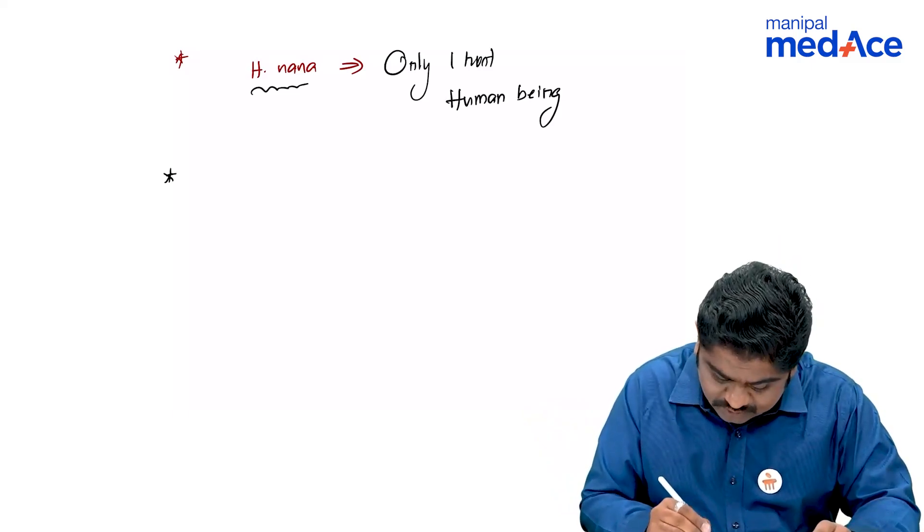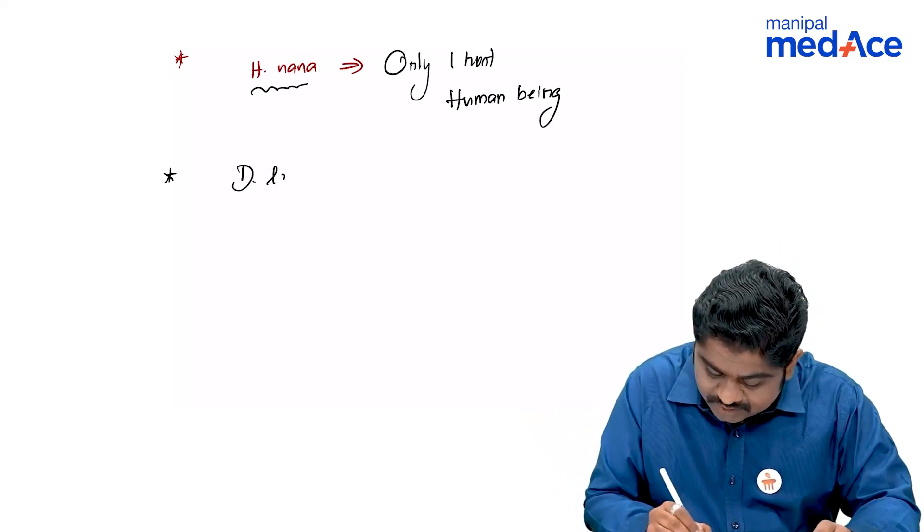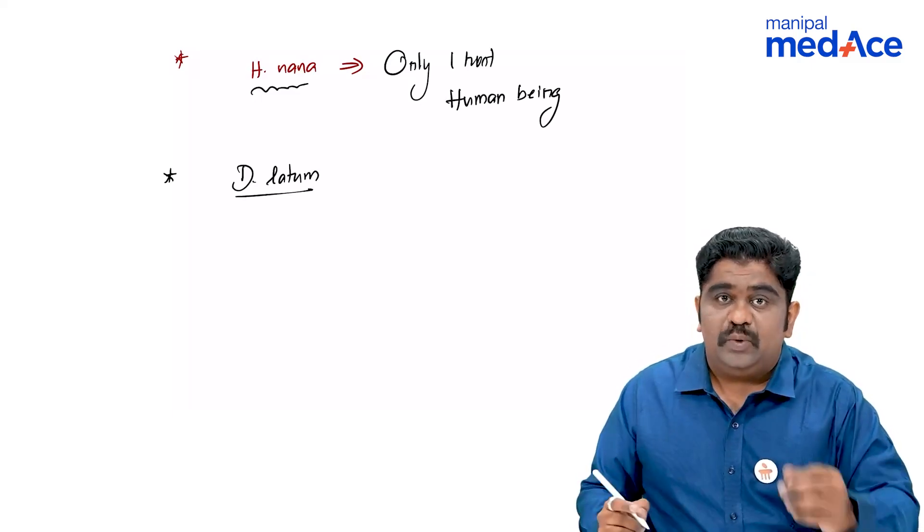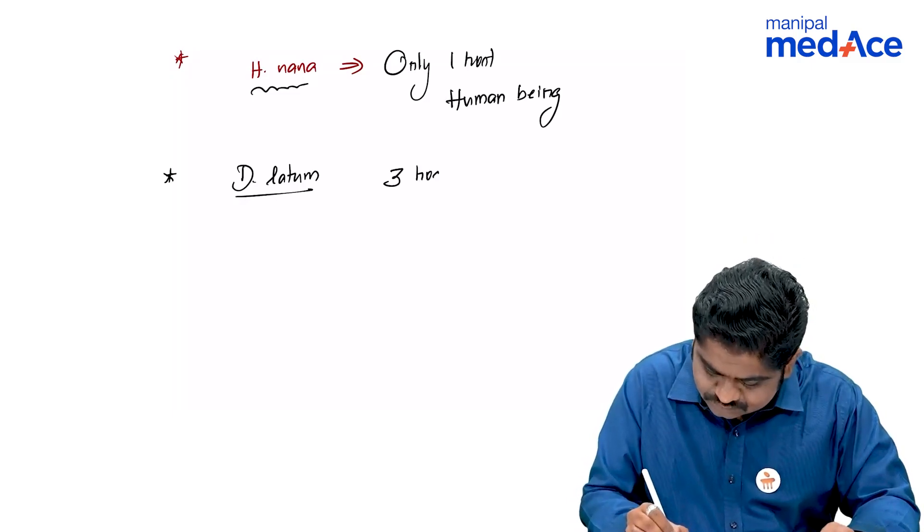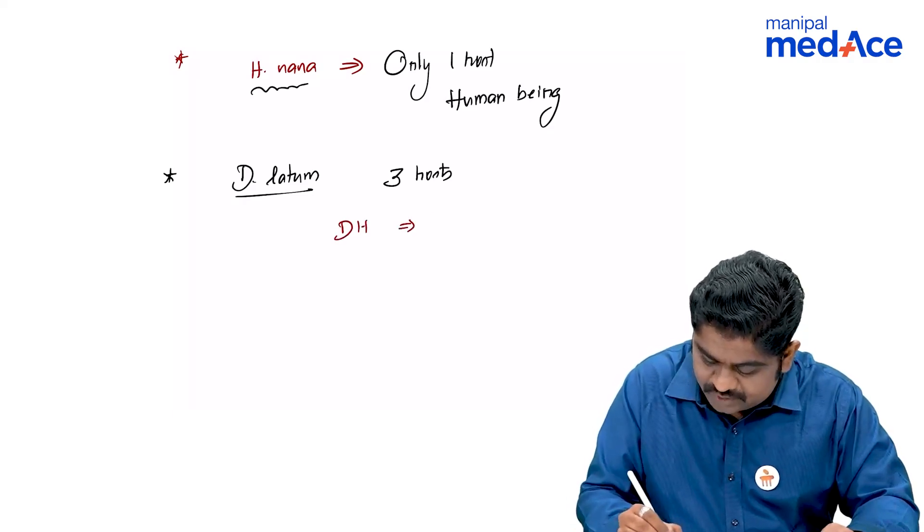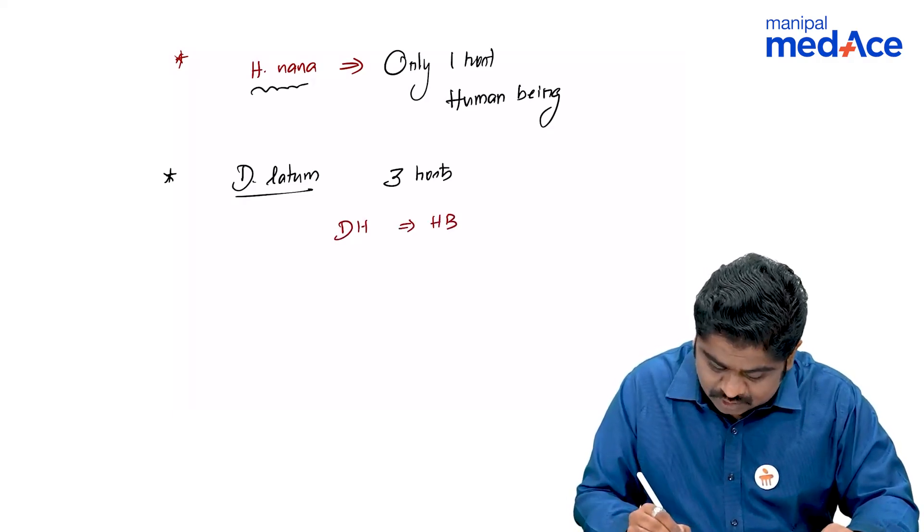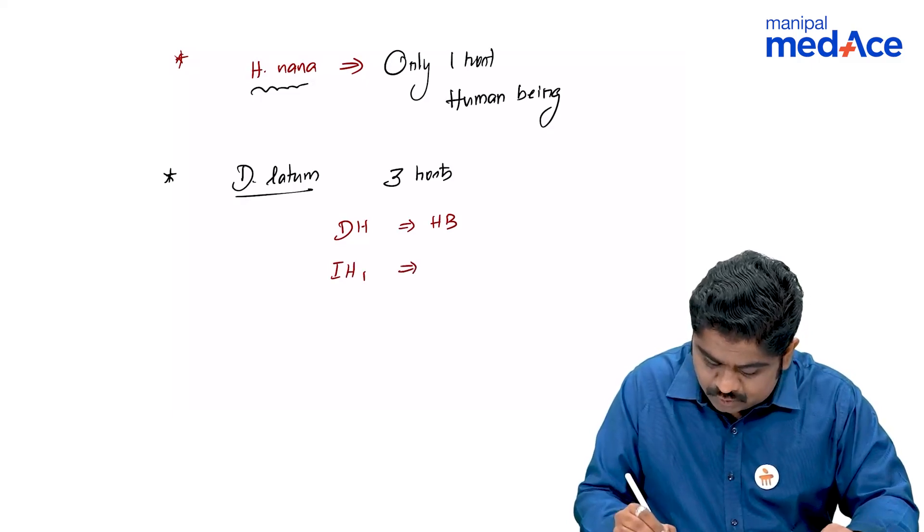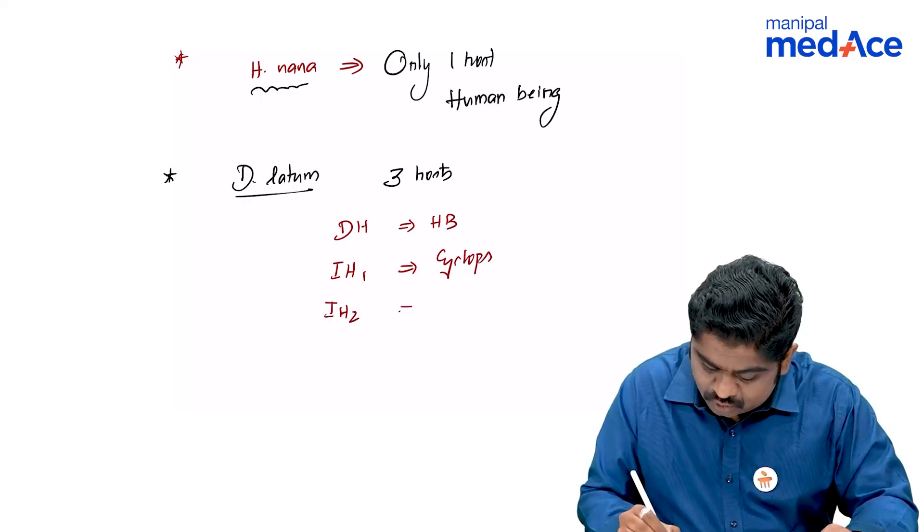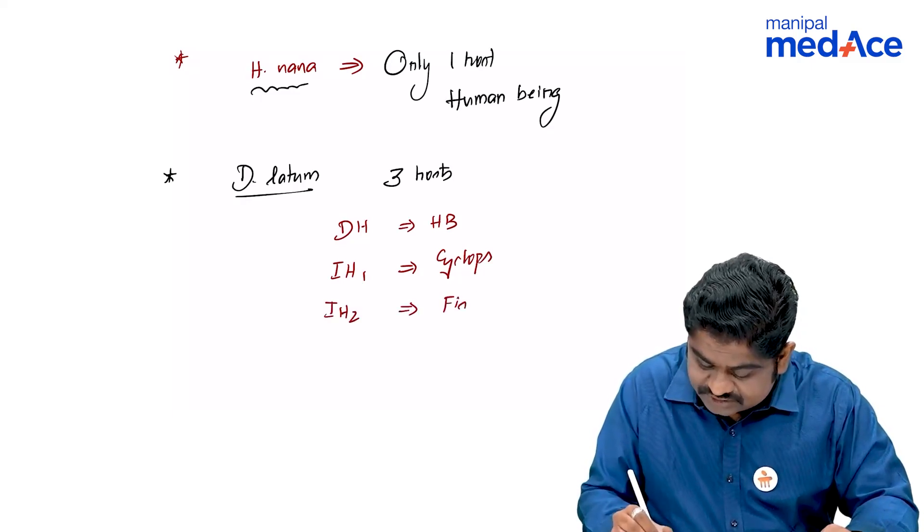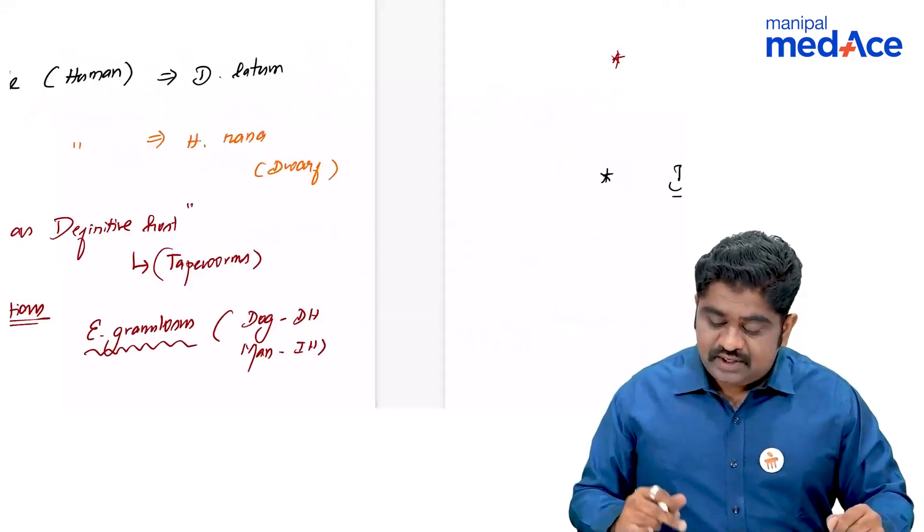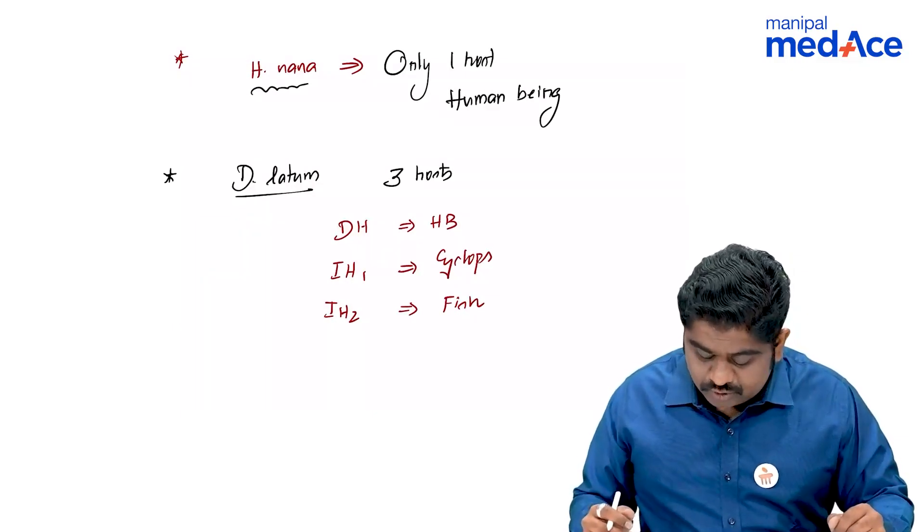That brings us to another question where we have Diphyllobothrium latum, which is the one special cestode attacking human being, which has three hosts. It has three hosts. You have the definitive host being human being, no doubt about it. But you have intermediate host number one, which is Cyclops. And we have intermediate host number two, which is fish. These are also MCQs raised in a lot of question papers in the last 20 years. I hope you will be able to use them.